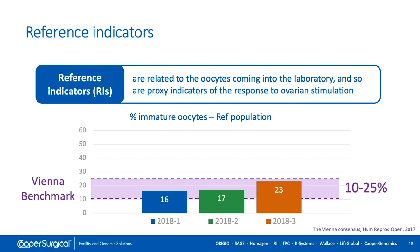Here is an example plotting three periods of 2018 against the Vienna benchmark of 10–25% immature oocytes. The first period was 16%, the second 17%, and the third 20% — all within benchmarking. However, there is a difference in the third period compared to the other two. We should ask whether this is a normal evolution and whether it might negatively influence our outcomes.